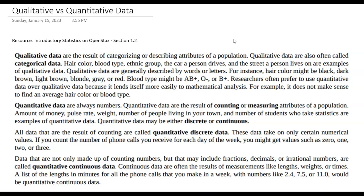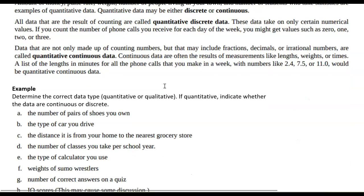However, there are going to be data that we collect sometimes, depending on the variable, that might include fractions, decimals, irrational numbers. And so we do need a continuous data variable for that. That would be quantitative continuous data. Those are going to be like lengths, weights, time, those types of variables that we measure and collect data on.